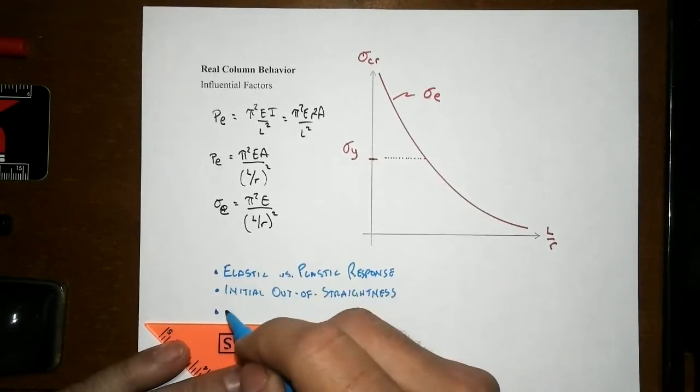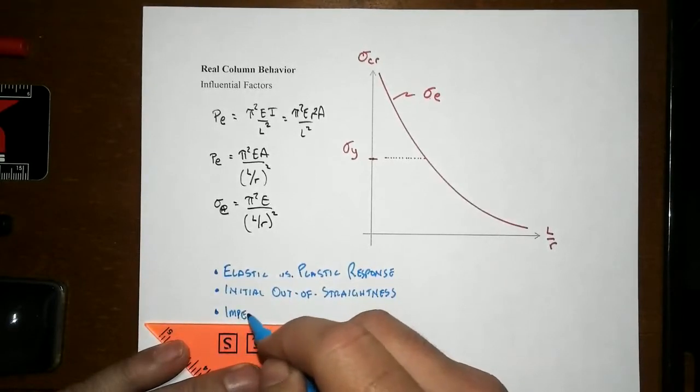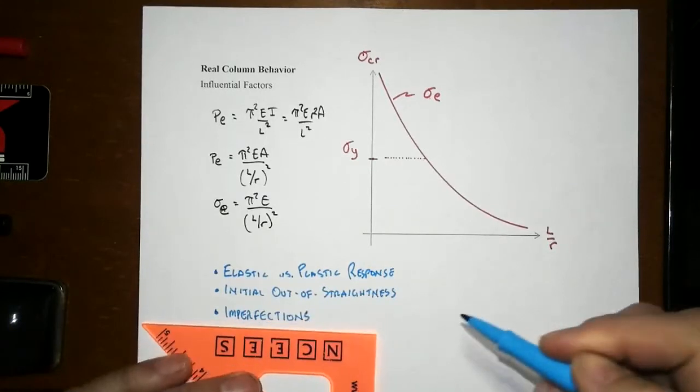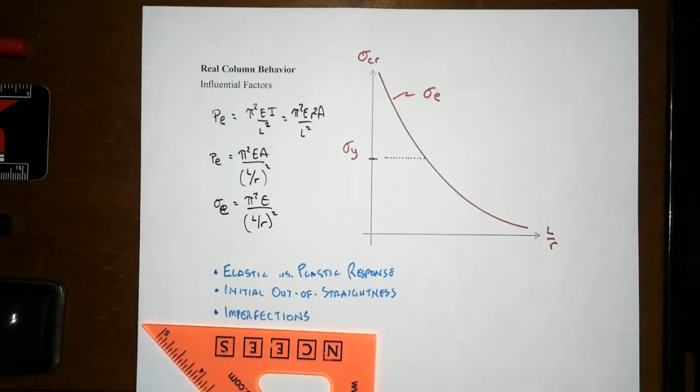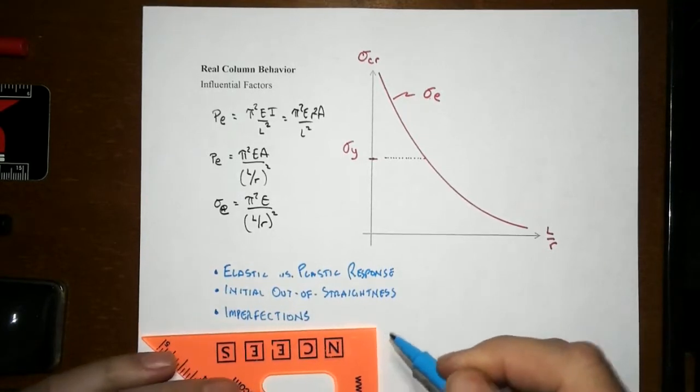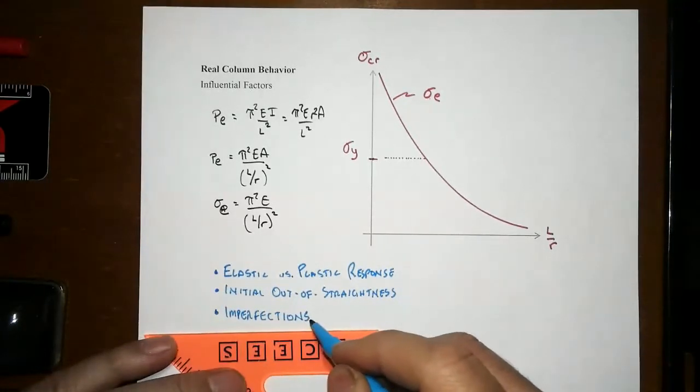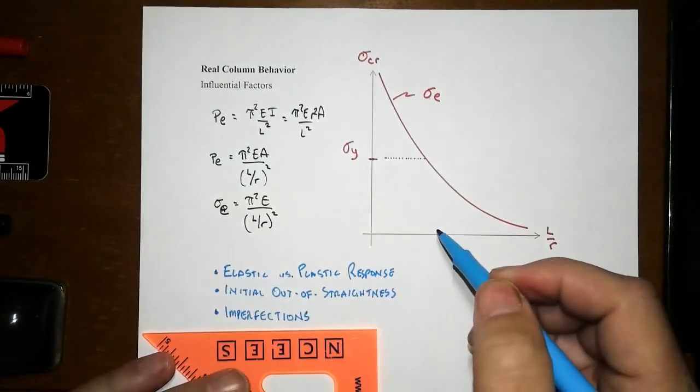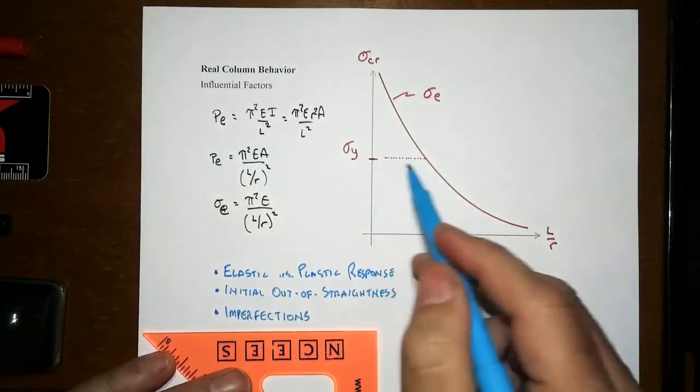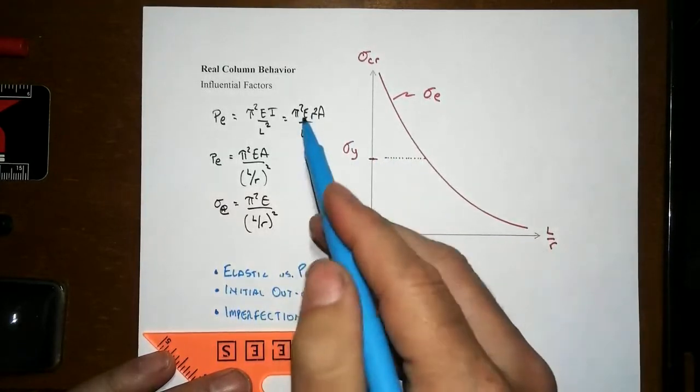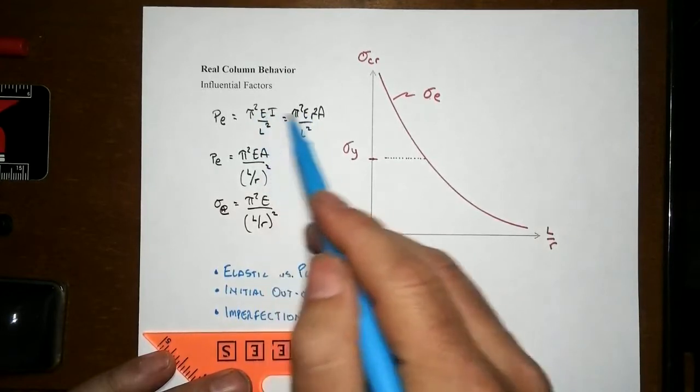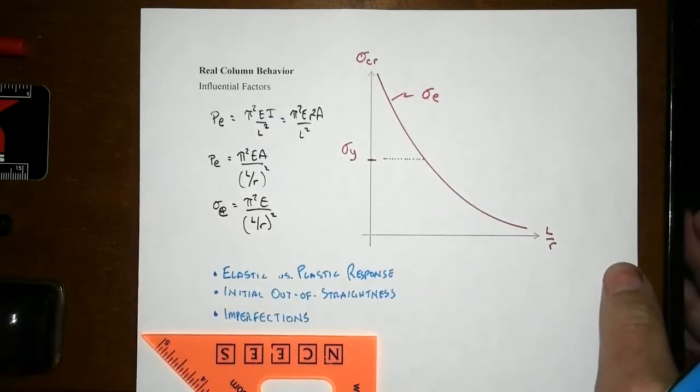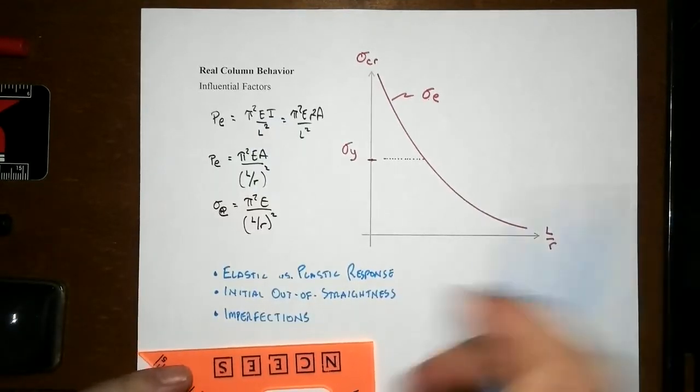You also have imperfections that are going to happen. Whether you call a change in material property an imperfection or natural variation, you get variability in the cross section and along the length. The strength of the material matters, but even more significant is the elastic modulus and how much that varies across the cross section or along the length.